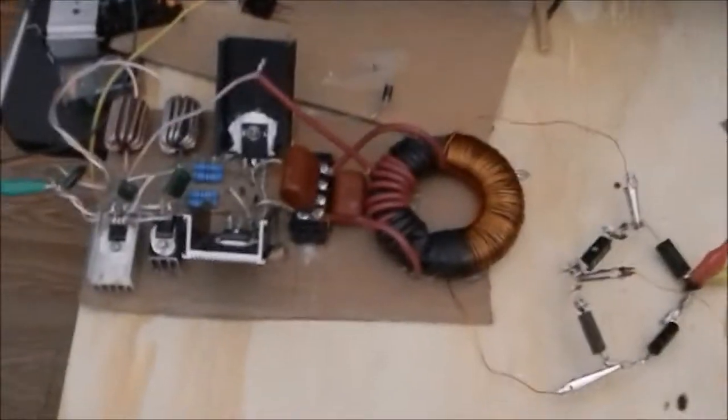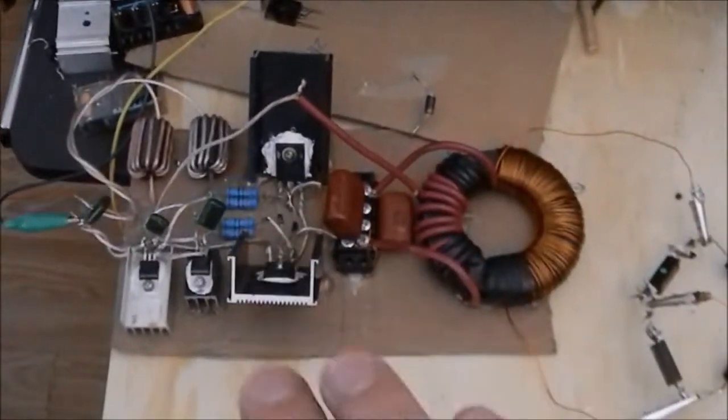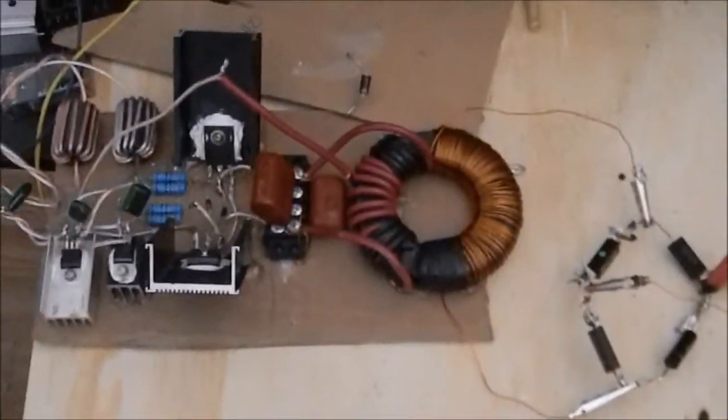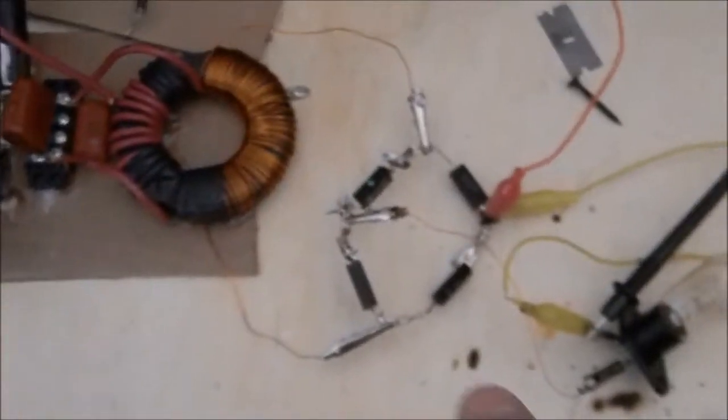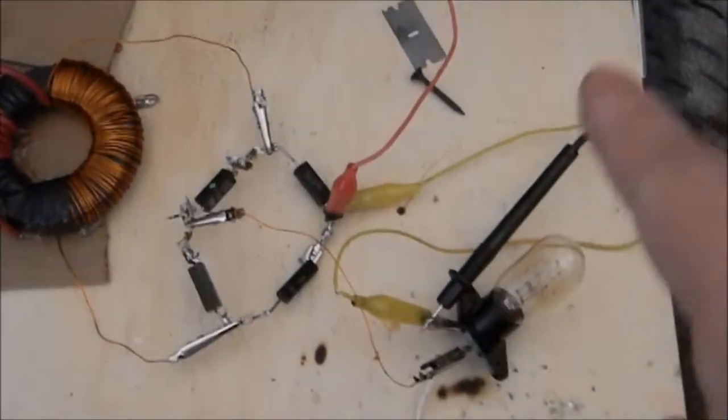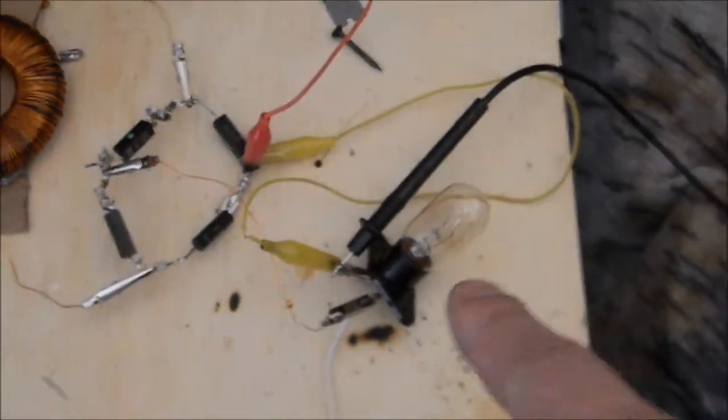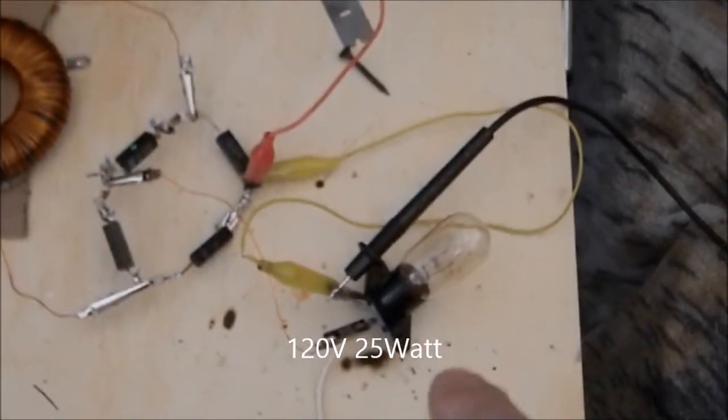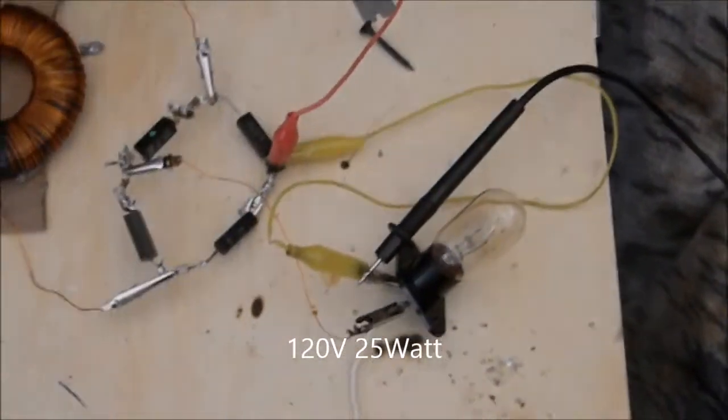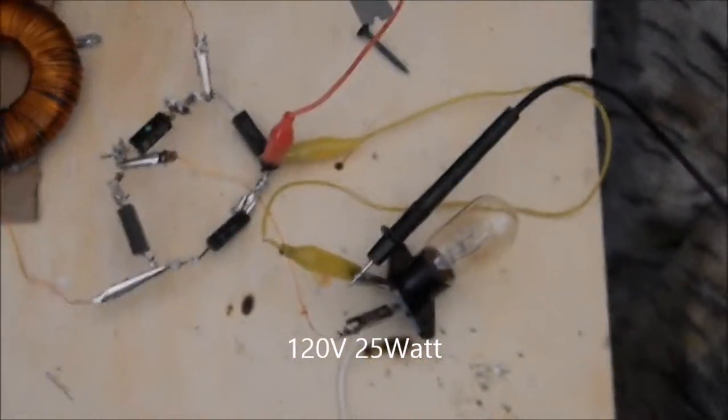Hey guys, just doing a video measuring the efficiency of this ZVS system I've built. The output of the ZVS goes to a full bridge rectifier and then across this 125 volt, no, 25 watt, 120 volt 25 watt light bulb.